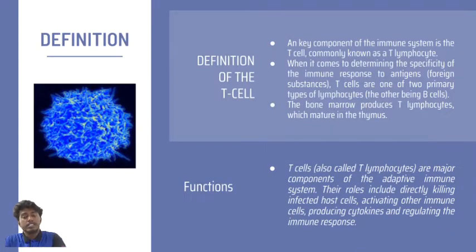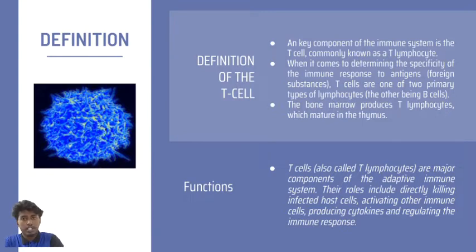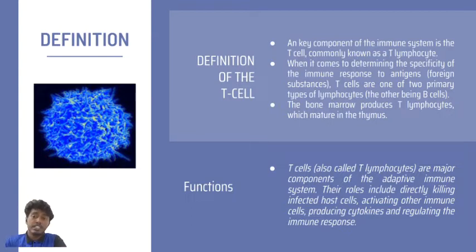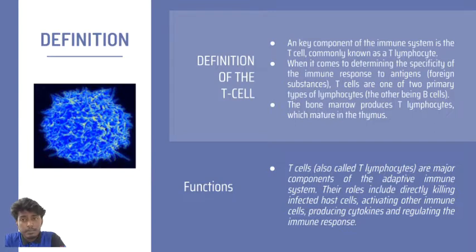Following on the T-cell, let's define it. A T-cell is a key component of the immune system, commonly known as T-lymphocytes. When it comes to determining the specific character of the immune response to antigens — which means the foreign substance itself — T-cells are one of the two primary types of lymphocytes, the other being B-cells. The bone marrow produces T-lymphocytes, which mature in the thymus. T-cells, also called T-lymphocytes, are major components of the adaptive immune system.